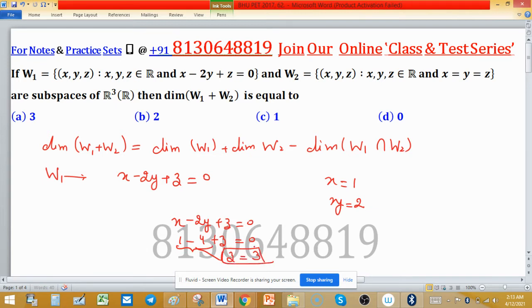If you pick any two entries, then value of the third one will depend on that. There are only two variables, so dimension of W1 is 2.